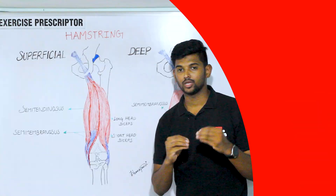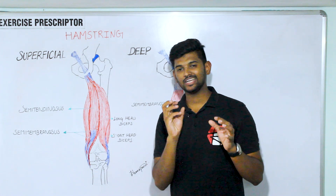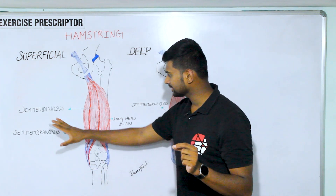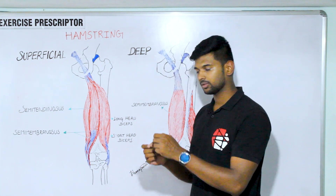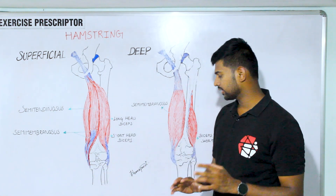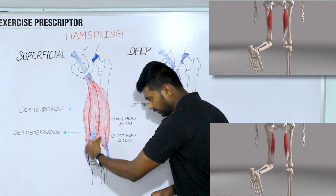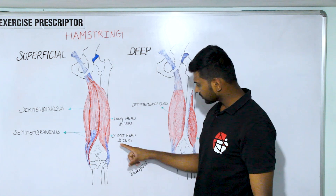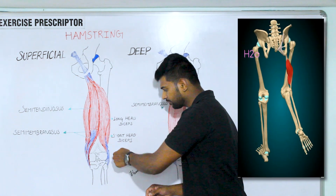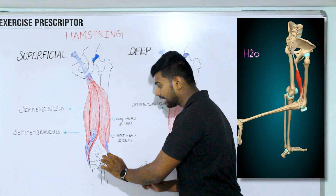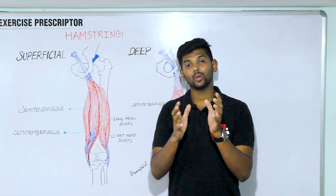An interesting function of the hamstring muscle is that it also helps in medial and lateral rotation of the tibia at the knee joint. Semitendinosus and semimembranosus attach to the medial aspect of the tibia — semitendinosus passing and attaching the anterior aspect of the tibia, and semimembranosus attaching the posterior aspect of the tibial condyle. When these muscles contract, they create medial rotation of the tibia at the knee joint. Biceps femoris attaches to the lateral aspect of the tibia and fibula; when it contracts, it creates lateral rotation of the tibia at the knee joint. This rotation function can only occur when the knee is flexed.